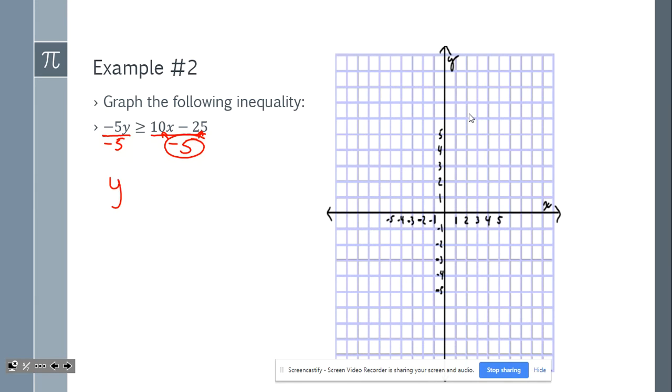So we have y, and we have a sign switch since we divided by a negative number. y is now less than or equal to negative 2x plus 5. That gives me a slope of negative 2 over 1 with the beginning point of 5. On my graph, I'll go to the y-axis and plot my first point at 5.